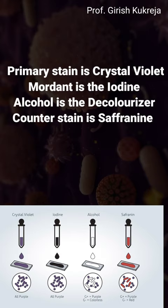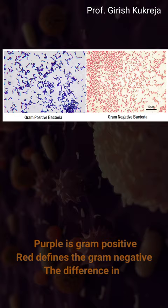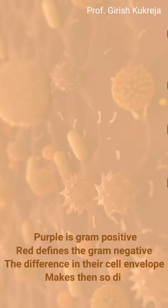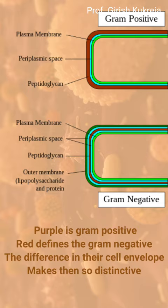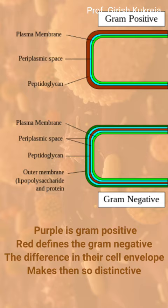The purple are Gram positive. The red ones define Gram negative. The difference in their cell envelope makes them so distinctive. Let's remember this humble bacteriologist, who said that my work may be defective or imperfect, but at the hands of others may turn out to be useful.